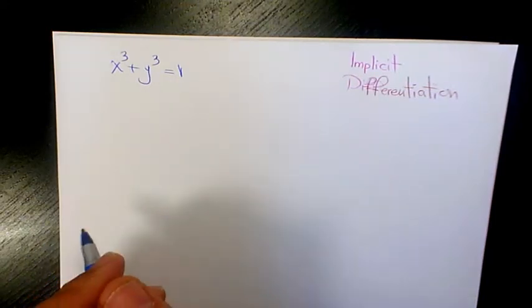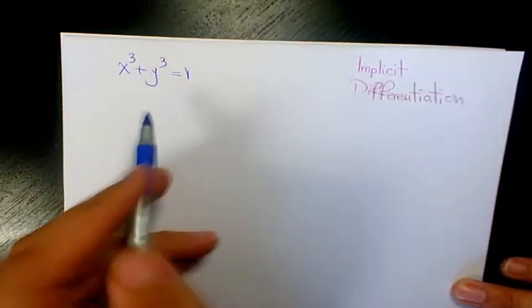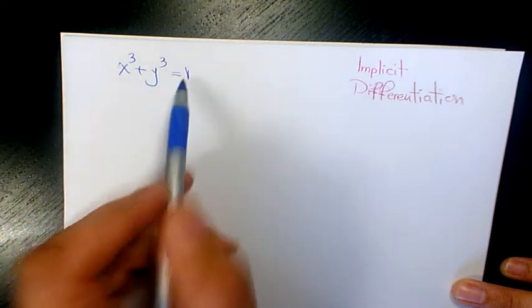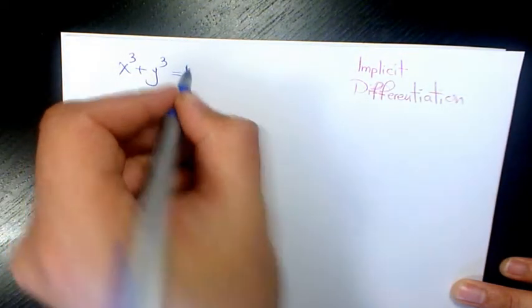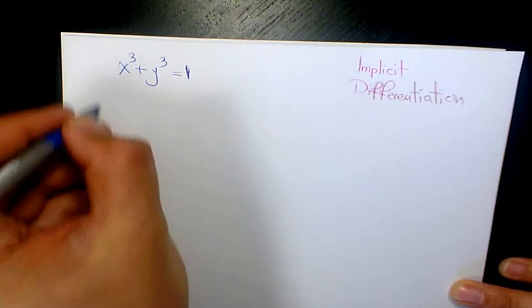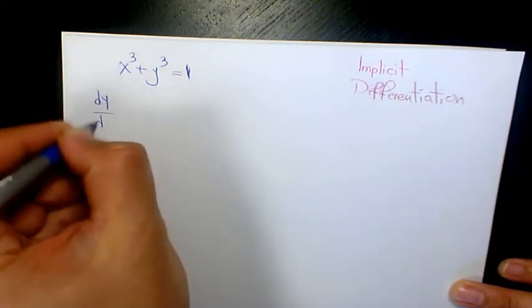What's up guys, this is Massy. Welcome to another video. In this video we have x³ + y³ = 1 and we need to use implicit differentiation in order to find dy/dx.